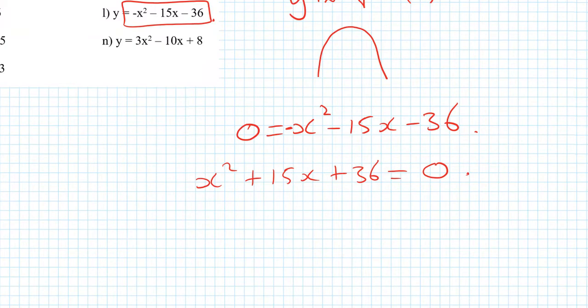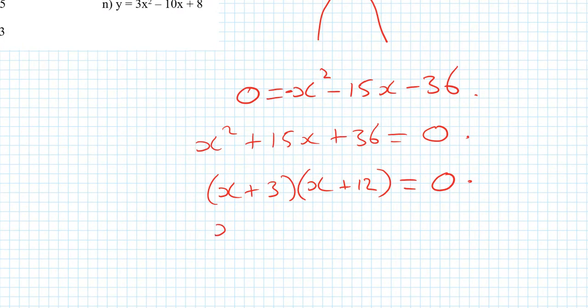Can I do this? Well, I know that I've got no number in front of the x squared. So maybe I can factorize it again. Two numbers that multiply to make 36 and add to make 15 are going to be 3 and 12. This is going to give me x is equal to minus 3 or x is equal to minus 12.